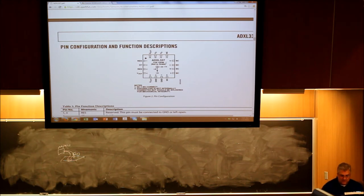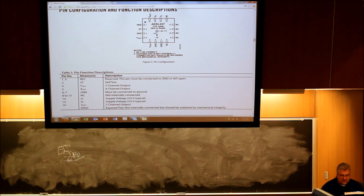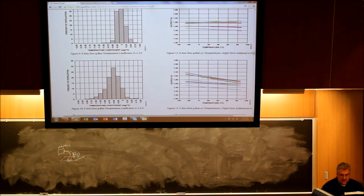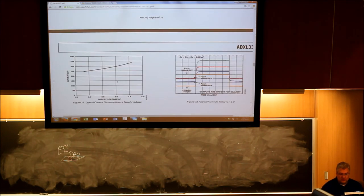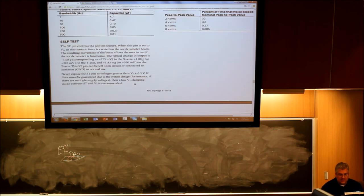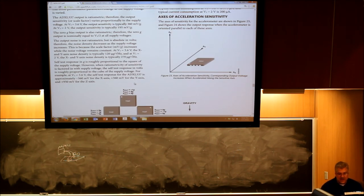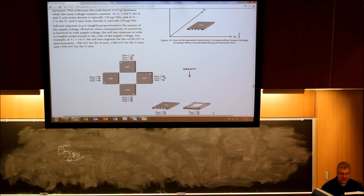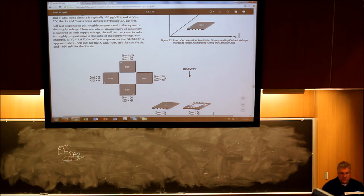And Z is obviously coming out of the page. That's a circle for an X, it would be going into the page. ST here says self-test, we don't really have to worry about that. The main thing I want you to observe is the general concept. As you have this device here and as it is oriented with the printed circuit board, it will be able to observe that X out measures negative 1g.